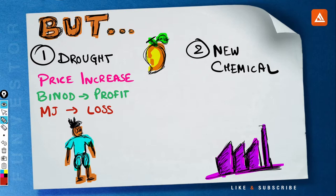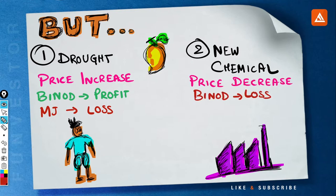But that's not it. On the other side, there is a plan to release a new type of chemical which would enable growing mangoes with very less water and also increase the growth. This will increase the supply, driving the prices to record low and hence causing huge losses to Binod while huge profit to MJ Limited.